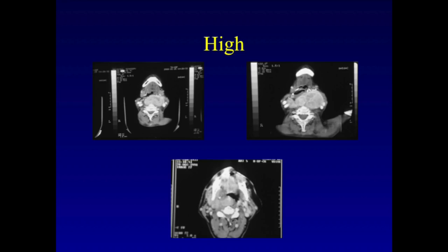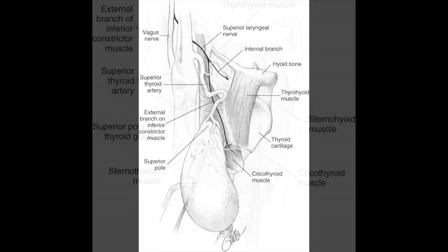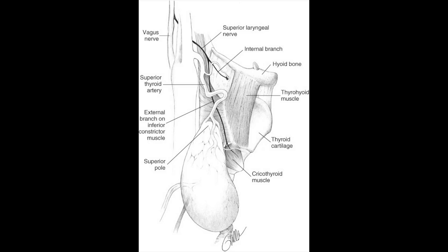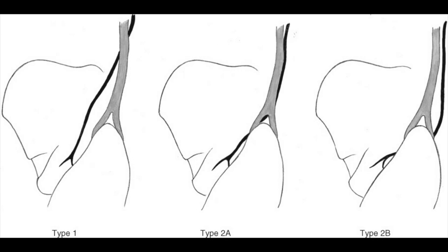Occasionally, goiters can extend superiorly and present difficulties in management as it relates to their superior pole goiterous formation. Here are three examples of large superior pole goiters. Normal superior pole anatomy relates to the external branch of the superior laryngeal nerve as it descends on the side of the larynx. Diagrammatically, the region of the external branch of the superior laryngeal nerve occurs within a triangular region bordered laterally by the sternothyroid muscle, medially by the inferior constrictor of the larynx, and inferiorly by the superior pole. Here is the CERNAY classification of external branch of the superior laryngeal nerve anatomy as it descends adjacent to the superior pole.